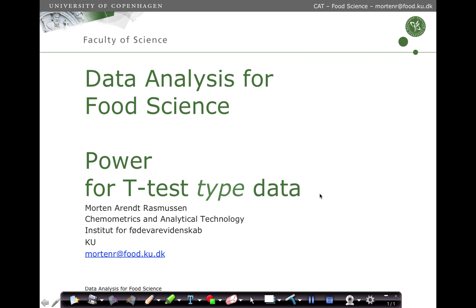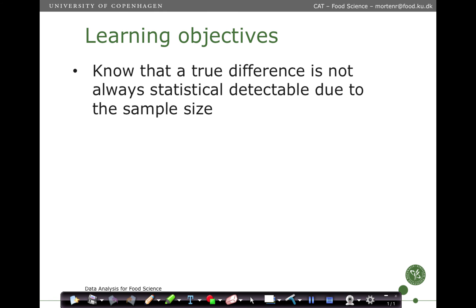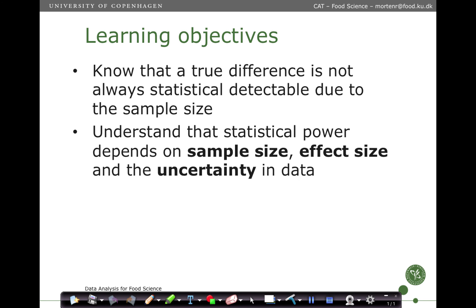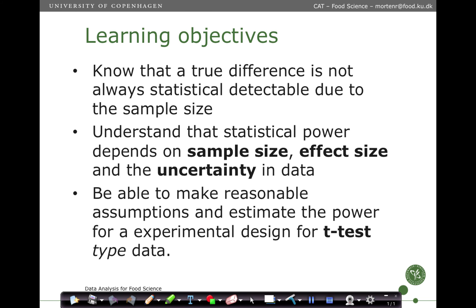In this lecture we are going to cover how to calculate the power for the type of data we would evaluate by a t-test. The learning objective is to know that a true difference is not always statistically detectable due to sample size, understand that statistical power depends on sample size, effect size, and the uncertainty in the data, and be able to make reasonable assumptions and estimate the power for an experimental design for t-test type data.